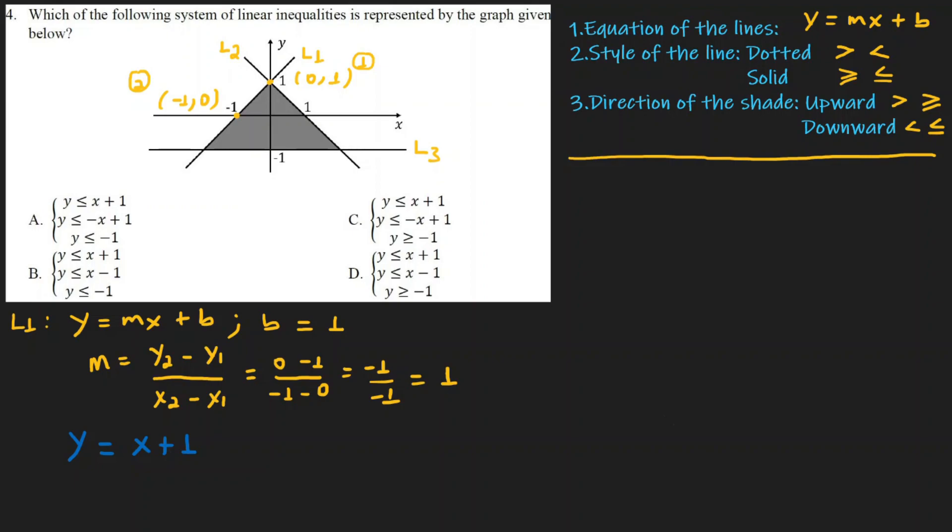Similarly, Line 2: y equals mx plus b. Line 2 has the same y-intercept as Line 1, so b equals 1. Now we need to find the slope.